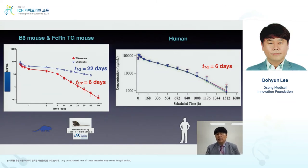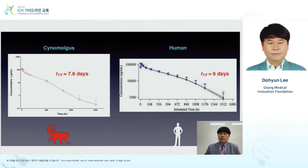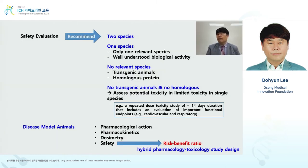This is a trastuzumab preclinical animal PK study comparing B6 mouse and TG mouse. The TG mouse shows a human-like PK profile similar to cynomolgus monkeys, which also shows similar PK with human. So when performing antibody PK studies, cynomolgus monkeys and TG mice are used.